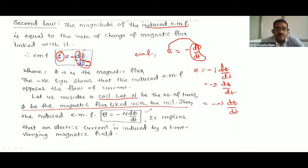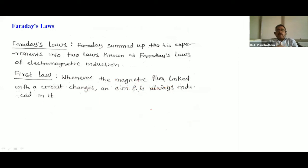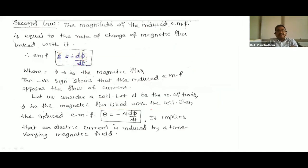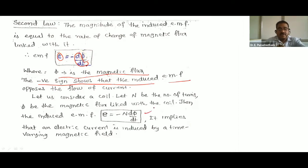To summarize: Faraday's First Law states that whenever the magnetic flux linked with a circuit changes, an EMF is always induced in it. Faraday's Second Law: E = −dΦ/dt, where dΦ/dt is the rate of change of magnetic flux. The negative sign represents that the induced EMF opposes the flow of current. For N turns, E = −N dΦ/dt.